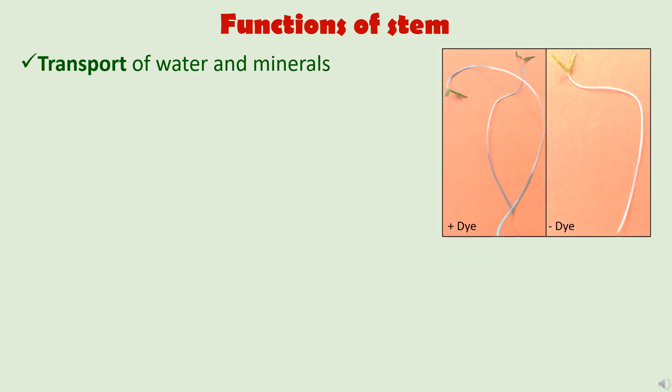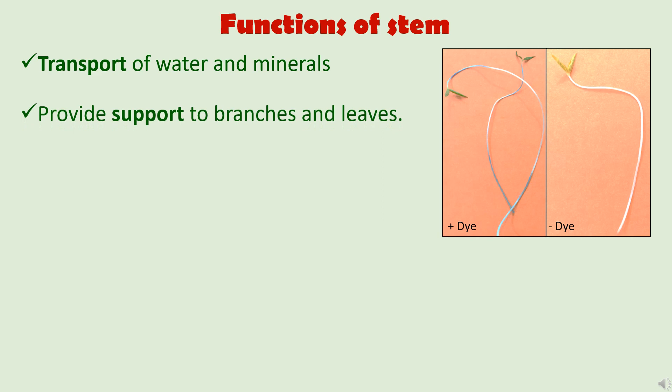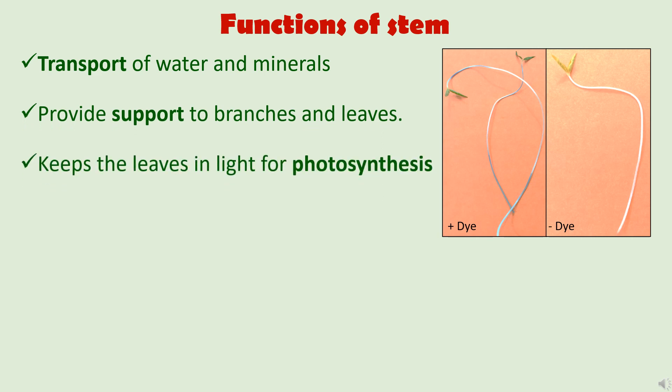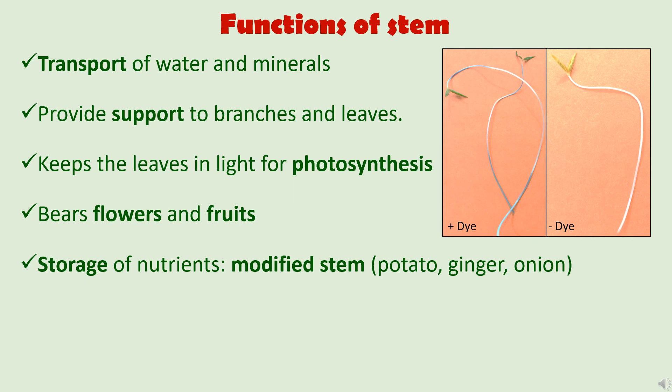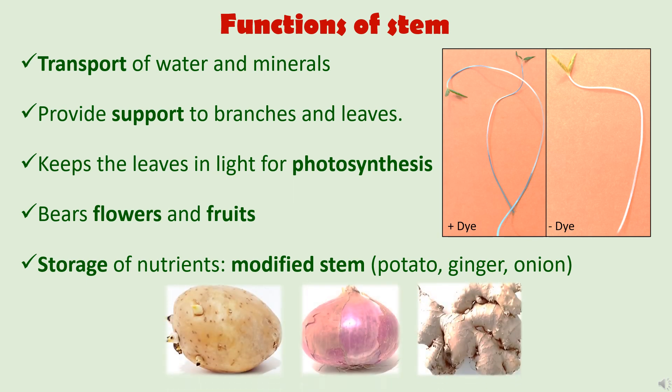Now the functions of a stem. Stem transports water and minerals — to prove this, an experiment was set up where stems of young plants were kept in blue dye. After a few hours, the stems turned blue in color, because the stems contain vascular tissues that help in the transport of water and minerals throughout the plant. Stems also provide support to branches and leaves, keeping the leaf in sunlight so leaves can trap maximum sunlight for photosynthesis. Stems bear flowers and fruits, and in some cases help in storage of nutrients. These are called modified stems — examples are potatoes, ginger, and onion.